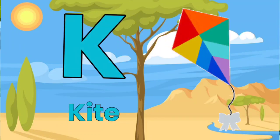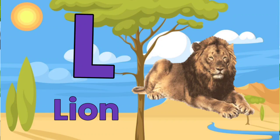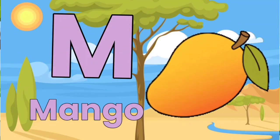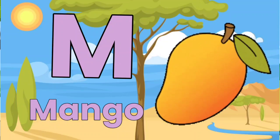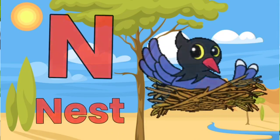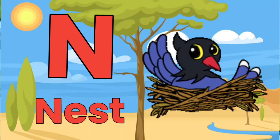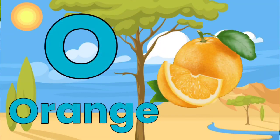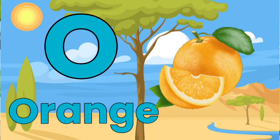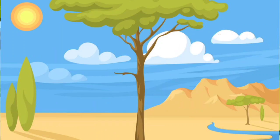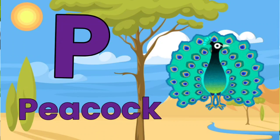K for Kite, L for Lion, M for Mango, N for Nest, O for Orange, P for Peacock.